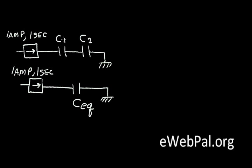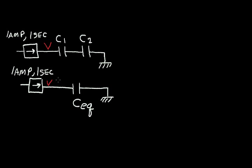On the top I have C1 and C2 connected in series. I'm going to inject a current of one amp into the left side for one second. Below I have an equivalent capacitor that replaces C1 and C2 with one capacitor called C_EQ. Again I'm going to inject one amp for one second into C_EQ. Since they are equivalent, I will get a voltage V at this terminal and the same voltage V on the capacitor at the bottom.